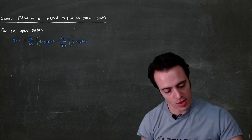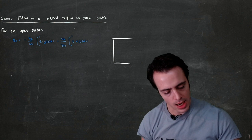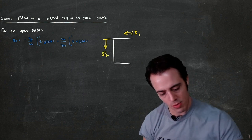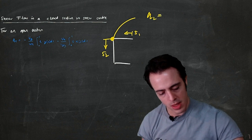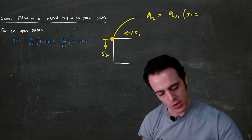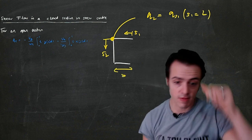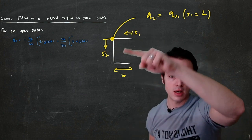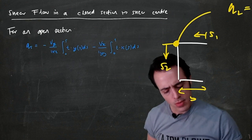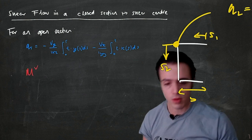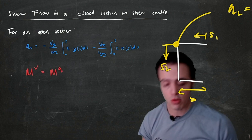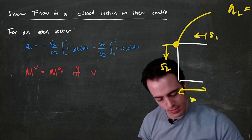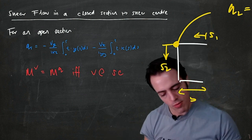If we have a section like this, our first ordinate s1 might be here, we'd then have s2 going down this way, and the starting value q2 would be equal to qs1 where s1 is equal to b, the width of the section. These values enabled us to work out the distribution in a vertical member. For an open section, the moment caused by an applied shear load equals the moment due to shear flow, if and only if V is applied at the shear center.